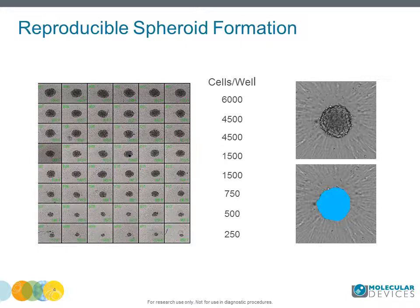Variation in spheroid size is usually less than 10%. Imaging of spheroids can be done with an automated imaging system, like the ImageXpress Micro Confocal system. Plating and media additions are similar to regular cell culture.